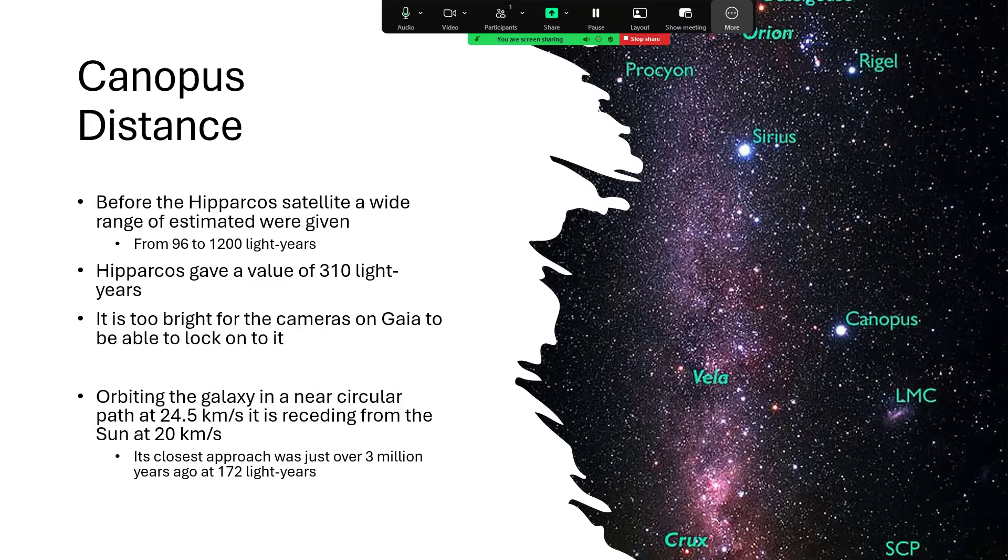And what we know about it is that it's orbiting around the galaxy in a very nearly circular path, doing about 24.5 kilometers per second, and slowly that's taking it away from the sun at about 20 kilometers per second.